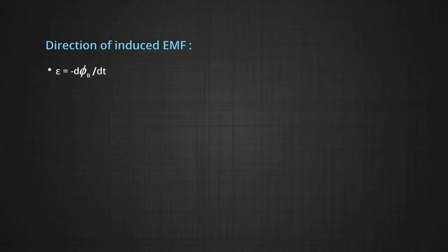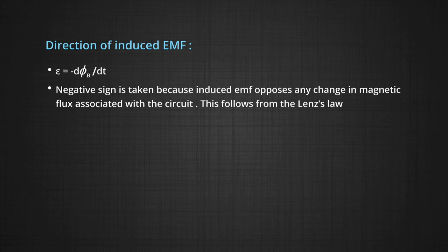Regarding the direction of the induced EMF: E = −dΦ_B/dt. The negative sign is taken because the induced EMF opposes any change in the magnetic flux associated with the circuit. This follows from Lenz's law, which will be discussed in module 2. Thank you.